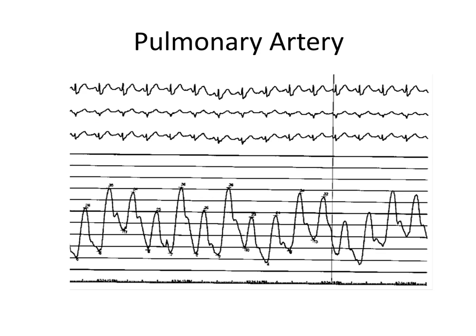Here is a pulmonary artery waveform from an actual patient. Again, you want to select the wave or waves that correspond to end expiration, picking the wave that precedes the highest waves. I have indicated with arrows the waves that most likely represent end expiratory pressures, noting that the pulmonary artery waveform occurs within the T wave on the rhythm strip. I have used circles to indicate the diastolic pressures that best correlate with end expiration.